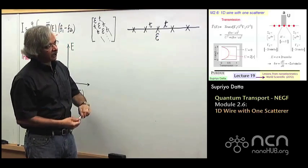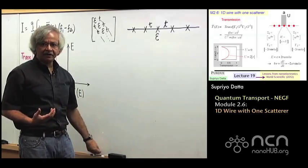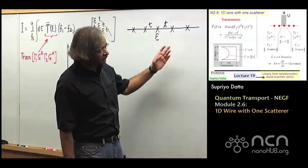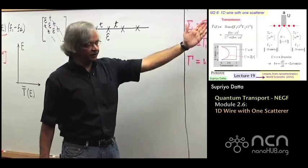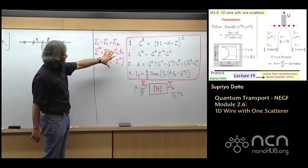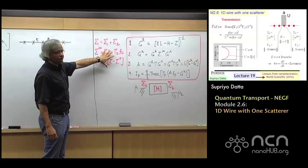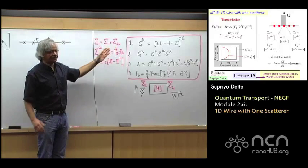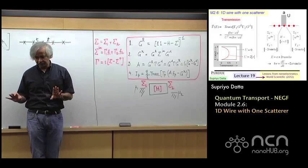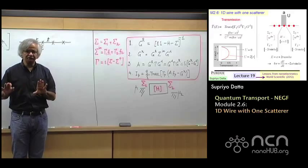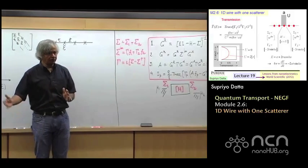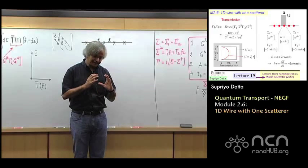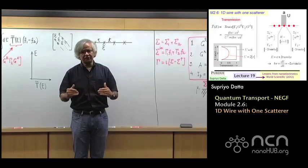In order to proceed further, I need to tell you how to write sigma 1 and sigma 2 — the two things that tell you the connection to the contacts. Because once we have that, mathematically it's straightforward and you can ask a computer to solve these equations. But there are two aspects: one is knowing how to calculate it, and the other is understanding what you are calculating. Starting today we'll be looking at different examples — I'll be telling you exactly how to calculate certain things, and then we'll try to understand what we have calculated.